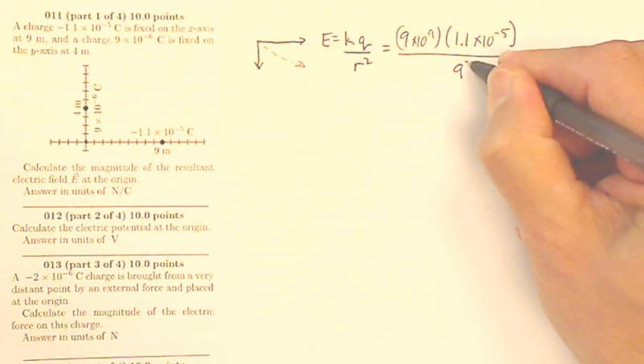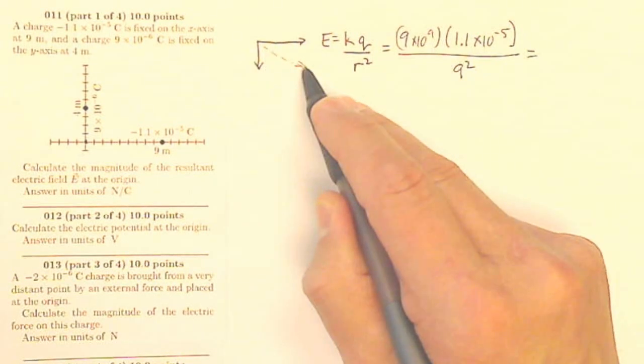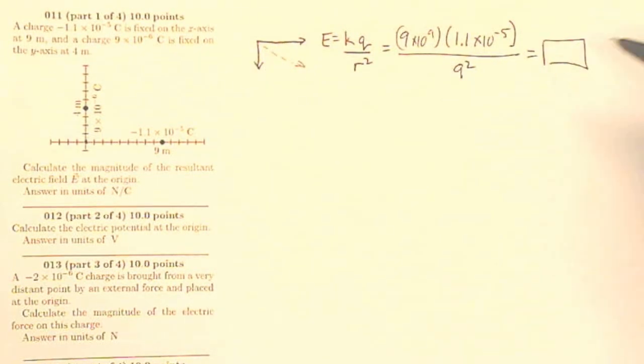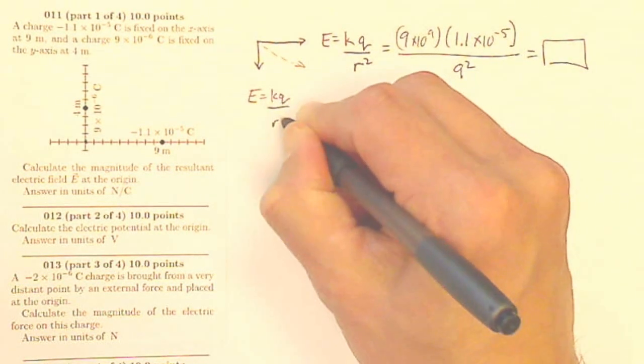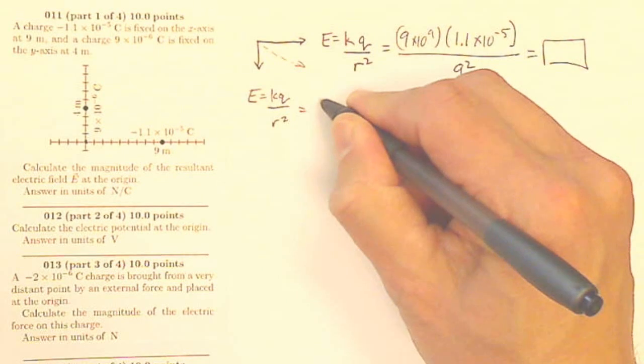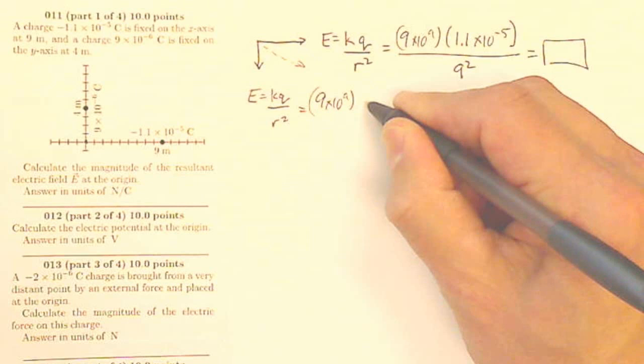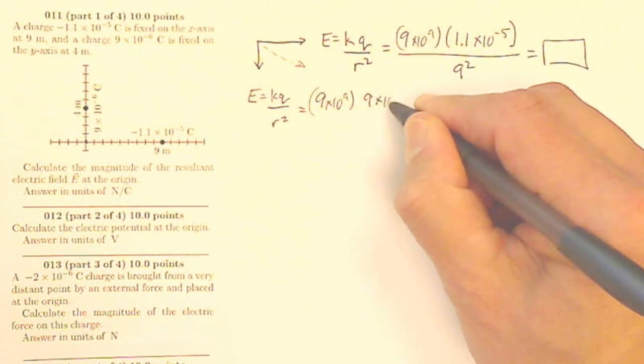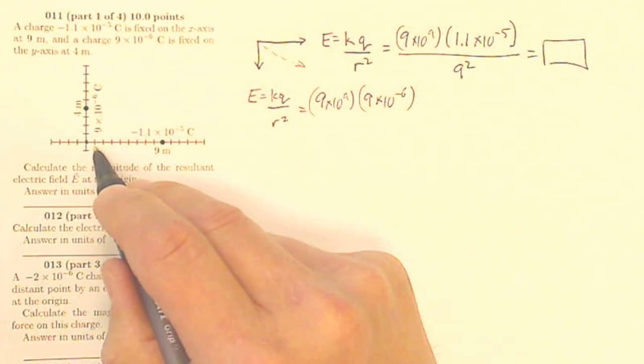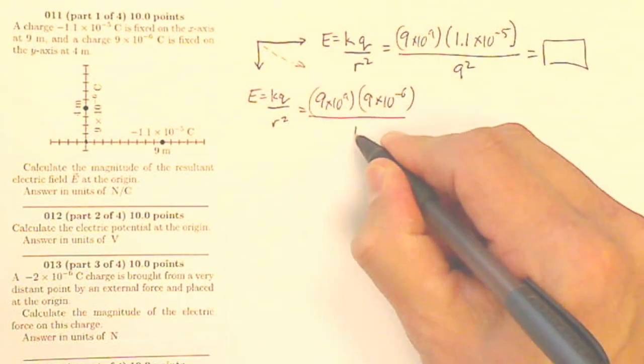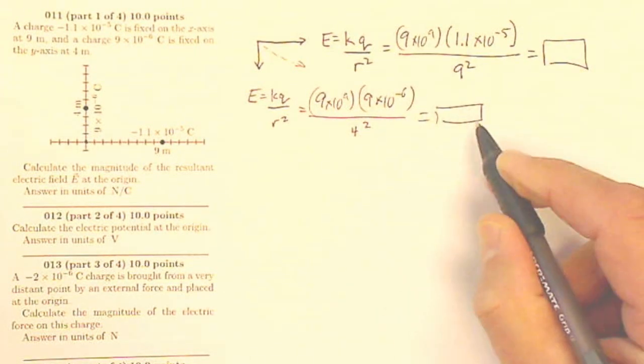1.1 times 10 to the minus 5th coulombs, divided by R squared. Well, I've got 9 meters, so that's going to be 9 squared. That'll give me my horizontal component of my resulting vector. I'm going to do the same thing for this one. This is E equals KQ over R squared. So this is K of 9 times 10 to the 9th. My Q is going to be 9 times 10 to the minus 6th coulombs. And then my R is going to be 4, and I better square that one as well, and that'll give me my vertical component.